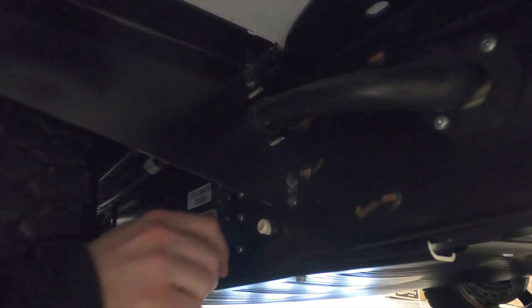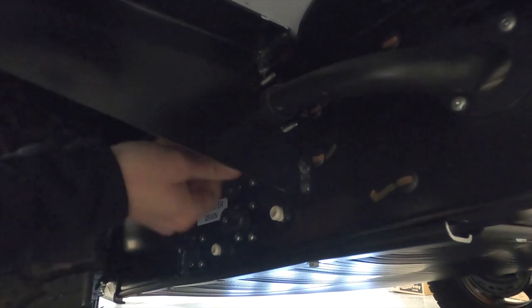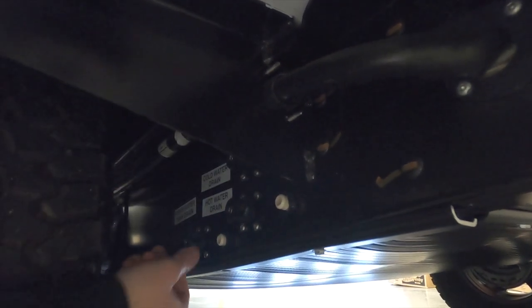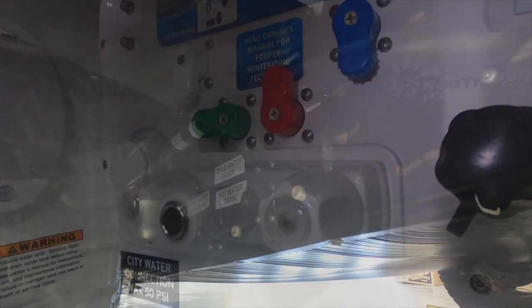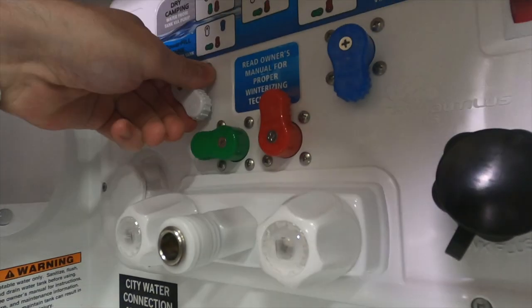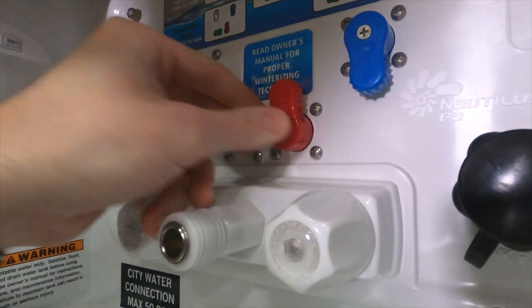You'll want to close the freshwater tank drain as well as the low point drain valves for the hot and cold lines. At the Nautilus, you'll want to put each of the knobs at a 45 degree angle.